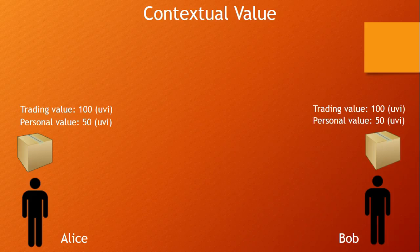Items have, therefore, two values: their personal value and their trading value. The trading value is essentially what another person perceives its personal value to be in their unique context. In this case, Alice's package is only worth 50 UVI to her, but is worth 100 UVI to Bob. Bob has a package that is worth 50 UVI to him, but is worth 100 UVI to Alice. This way, from both sides' perspective, they are each gaining something of greater value to them than the item they are giving up, because the item they are giving up is more valuable to the other person than to themselves.